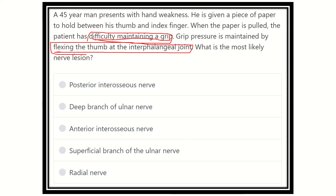We have to find out which nerve injury is responsible. The options are: posterior interosseous nerve, deep branch of ulnar nerve, anterior interosseous nerve, superficial branch of ulnar nerve, and radial nerve.